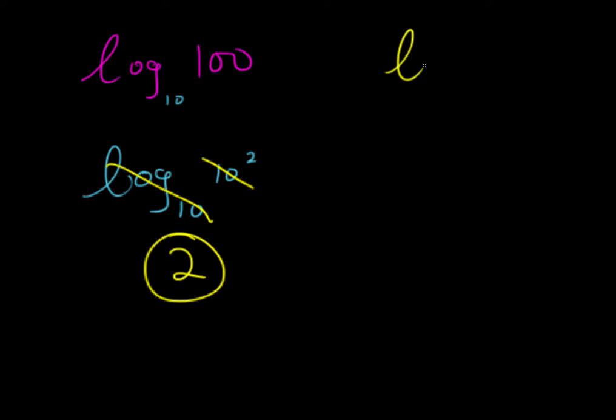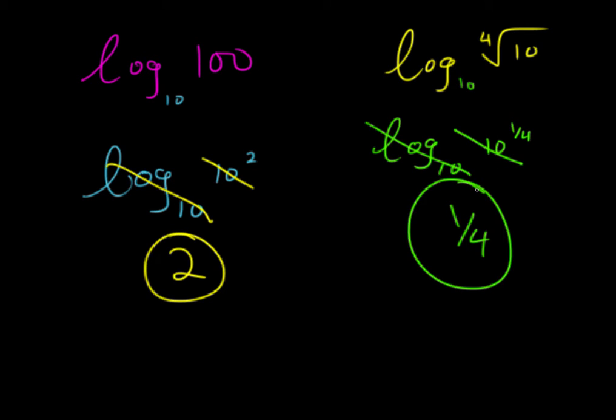If we have log and then the fourth root of 10, remember there's a base 10 here. We can write the 10 under this root as 10 to the 1/4th, these cancel, we're left with 1/4.